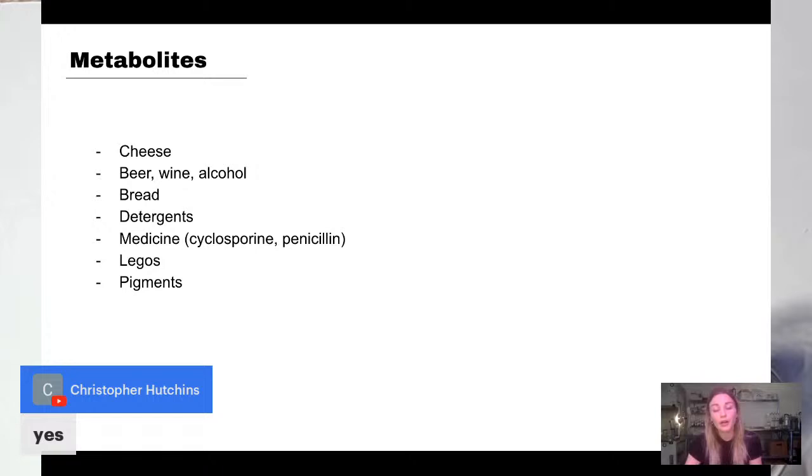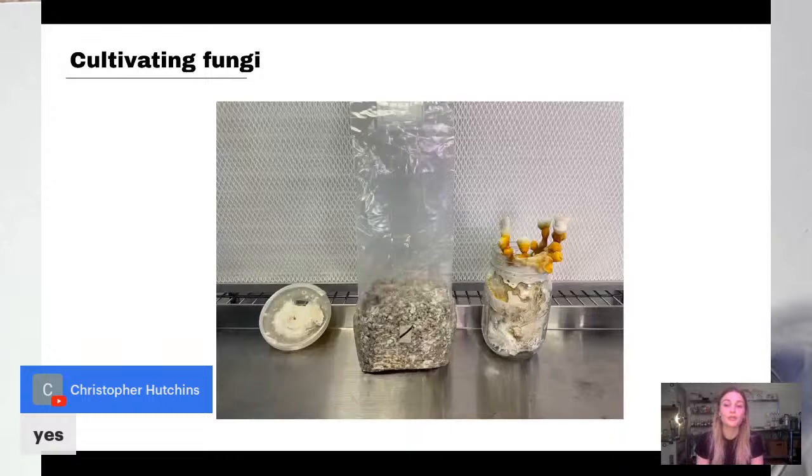Then you go from grain spawn to your bulk substrate. I tested the substrate for all three fungi that are included in your kits, and they all did really well on those bricks that you got. That was exciting because those bricks make mushroom farming so much easier. All you have to do is add boiling hot water and that is enough to pasteurize the material.